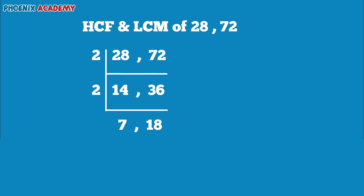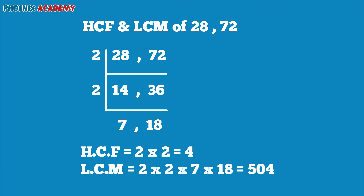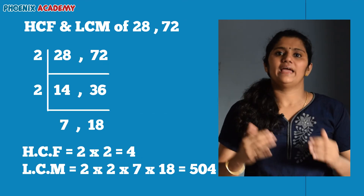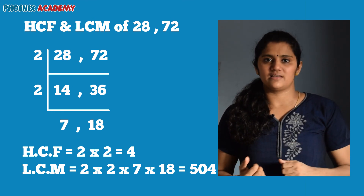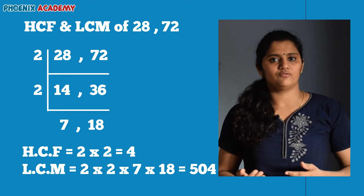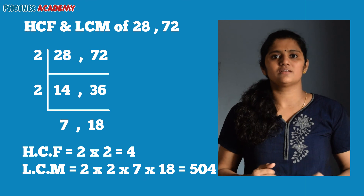Now let's find out HCF and LCM. HCF is the product of common prime factors, that is 4, which is 2 into 2. To find out the LCM, we are multiplying 2, 2, 7 and 18. We got 504. So the LCM of 28 and 72 is 504 and HCF is 4.